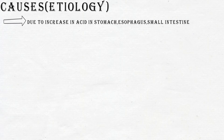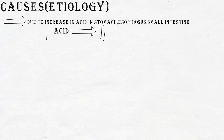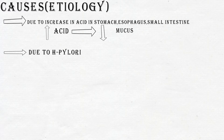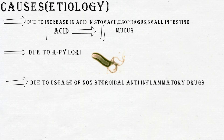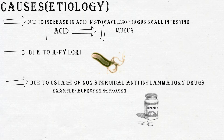Peptic ulcers etiology. Due to the increasing of acid in the stomach, esophagus, and small intestine, there is a depletion of mucous production and mucous layer. The next and most important cause is H. pylori infection.